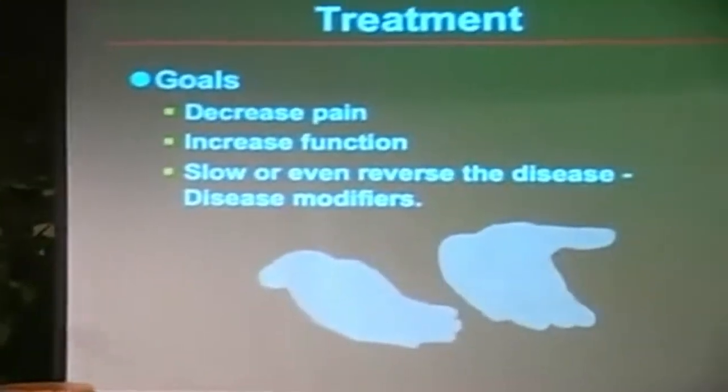The spine, really any joint, even the jaw — if you have a cracking jaw, that can be a little bit of osteoarthritis. The toes, the ankles — any joint can be affected. If we're going to treat this, our goal is to decrease pain, increase function, and if possible slow or reverse the disease — that's what we call disease modification.